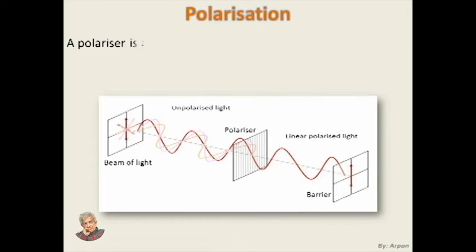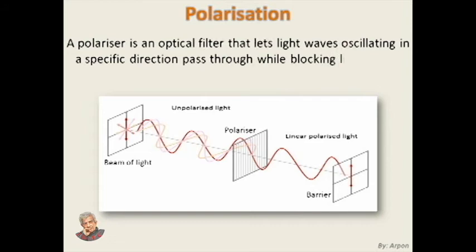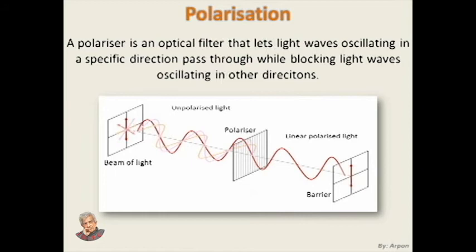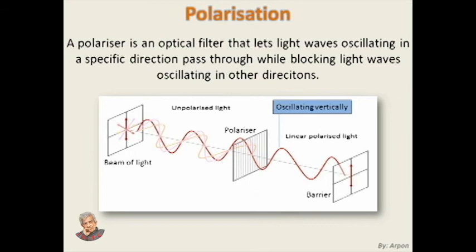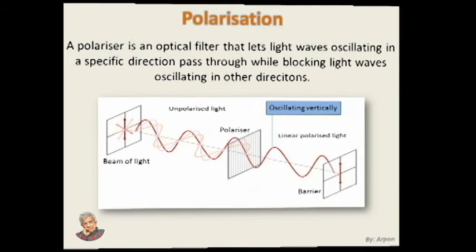Unpolarized light can be polarized by using a polarizer. A polarizer is an optical filter that lets light waves oscillating in a specific direction pass through while blocking light waves oscillating in other directions. In the picture, unpolarized light is coming towards the polarizer and being polarized so the light oscillates in one direction — after passing through the polarizer, it oscillates only vertically. If a second polarizer which blocks vertically oscillating light waves is placed after the first polarizer, then no light wave will pass through and the barrier will be dark.